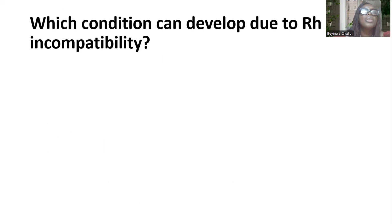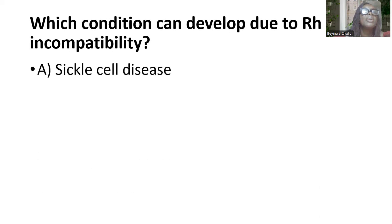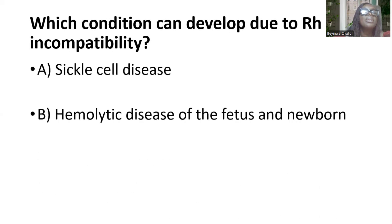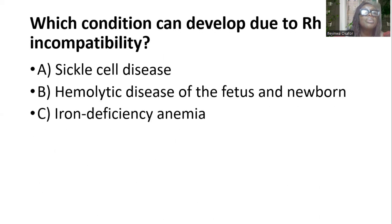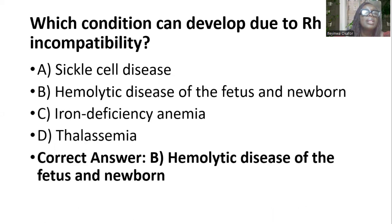Which condition can develop due to RH incompatibility? Options are sickle cell disease; hemolytic disease of the fetus and the newborn; iron deficiency anemia; thalassemia. And the answer is B — hemolytic disease of the fetus and the newborn.